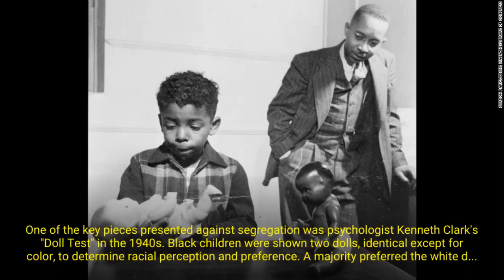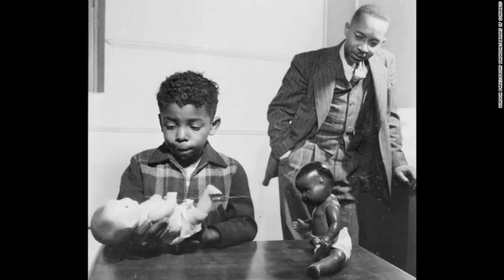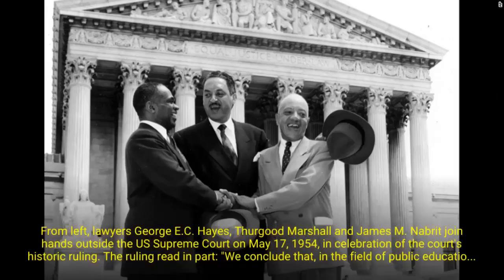August 1951, the Kansas District Court rules segregation is not illegal. August 1951, the NAACP files an appeal of the Kansas ruling to the Supreme Court. Joining in the appeal are cases from Delaware, Washington, Virginia, and South Carolina. The case is now known as Brown v. Board of Education. December 9–11, 1952, the Supreme Court hears arguments in Brown v. Board of Education.